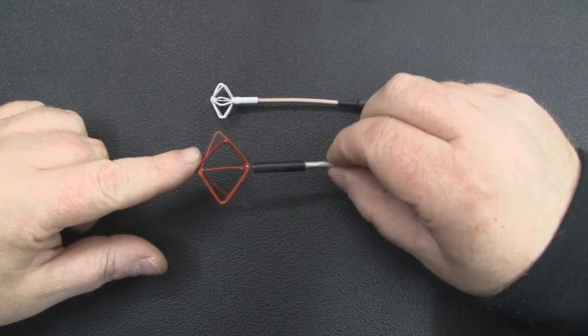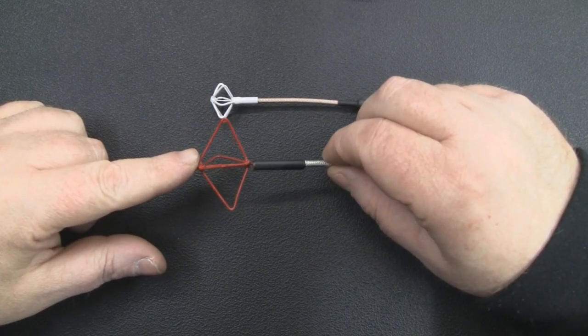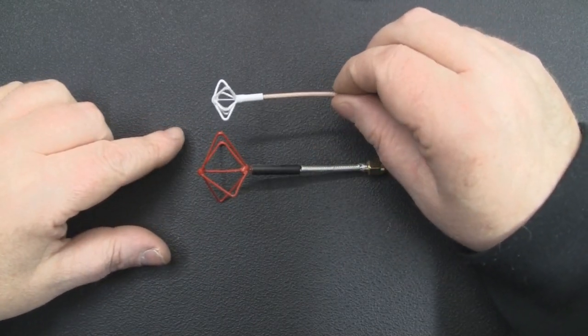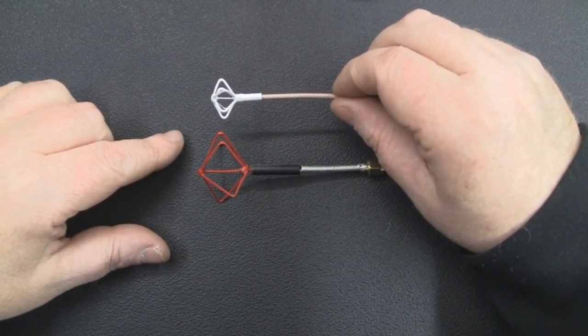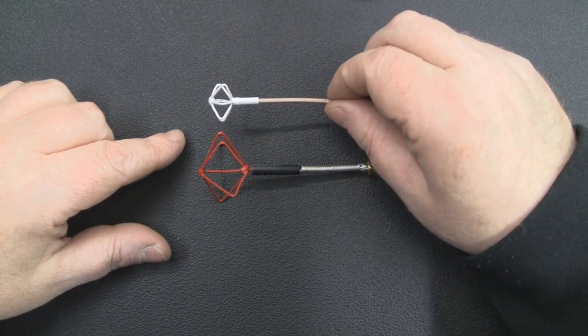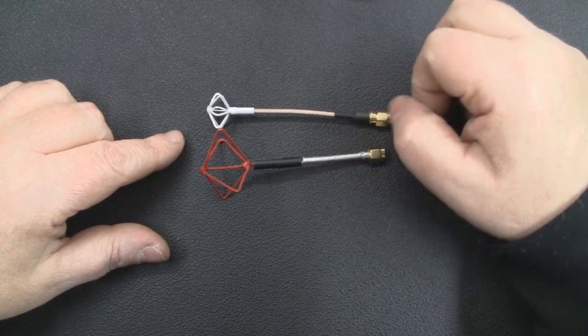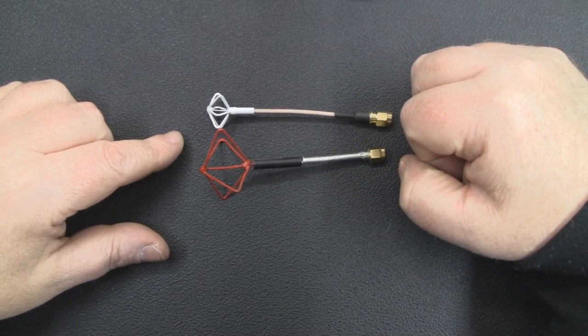Instead of just duplicating what we did with the 2.4 gigahertz blade, I thought I'd construct one with six blades, which is a little bit tricky when dealing with such a smaller antenna. You can see with these two side by side the size difference between those frequencies.